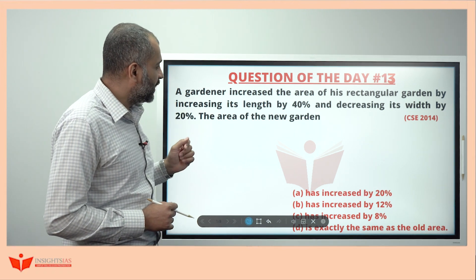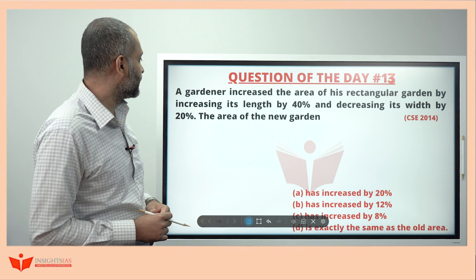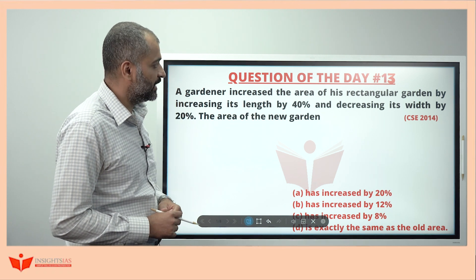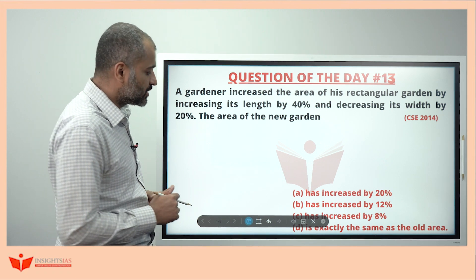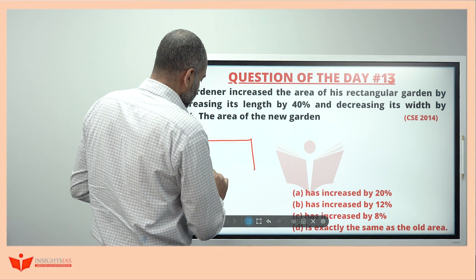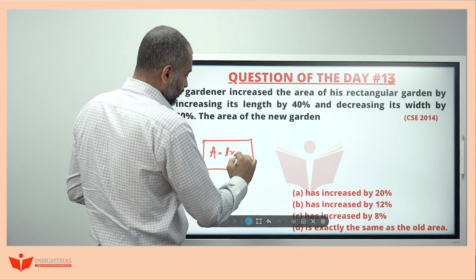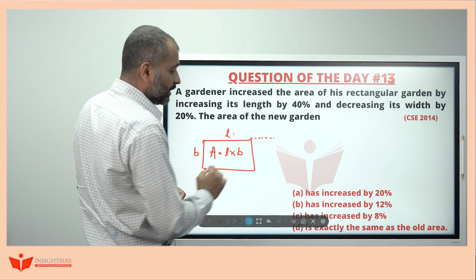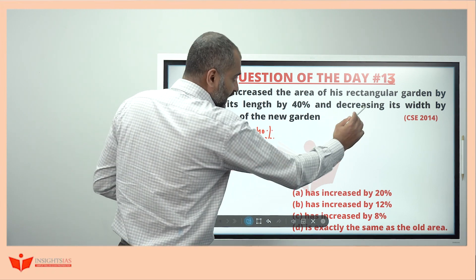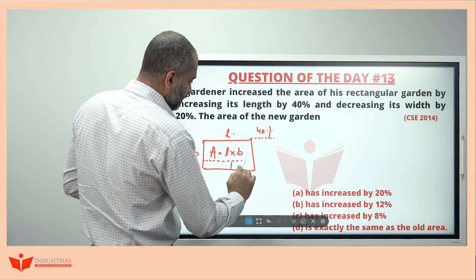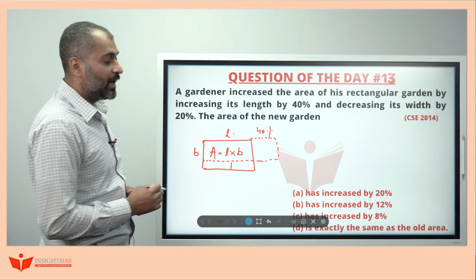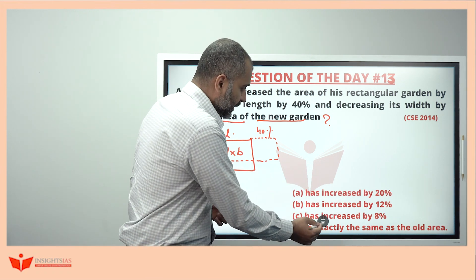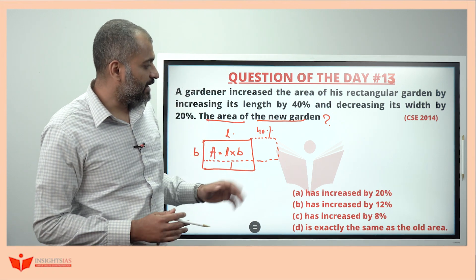The question I have picked was asked in the 2014 paper. A gardener increased the area of his rectangular garden by increasing its length by 40% and decreasing its width by 20%. The area of the new garden becomes how much — increased by 20%, increased by 12%, increased by 8%, or exactly the same as the old area?